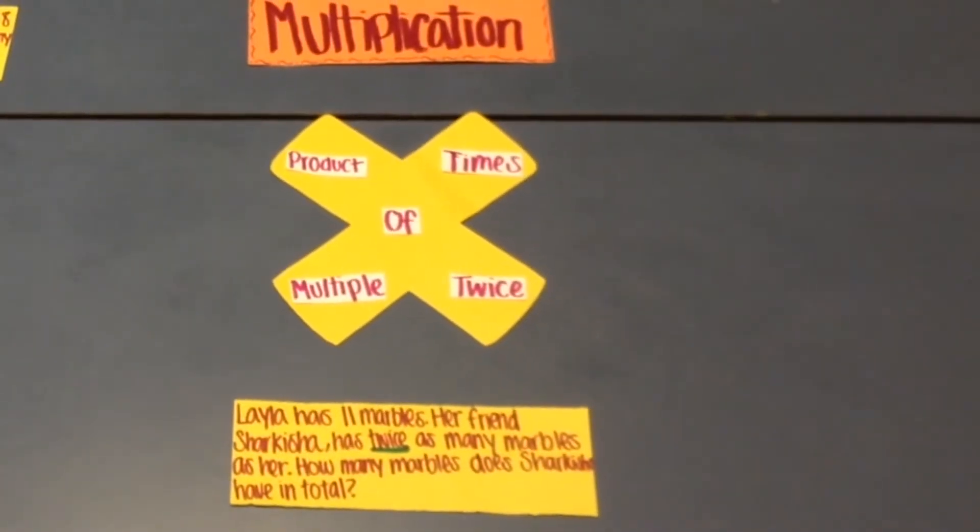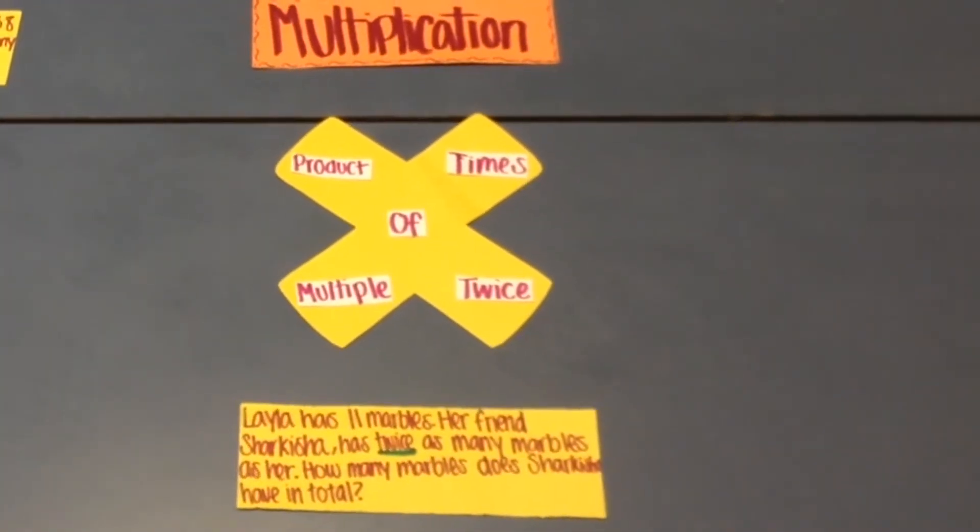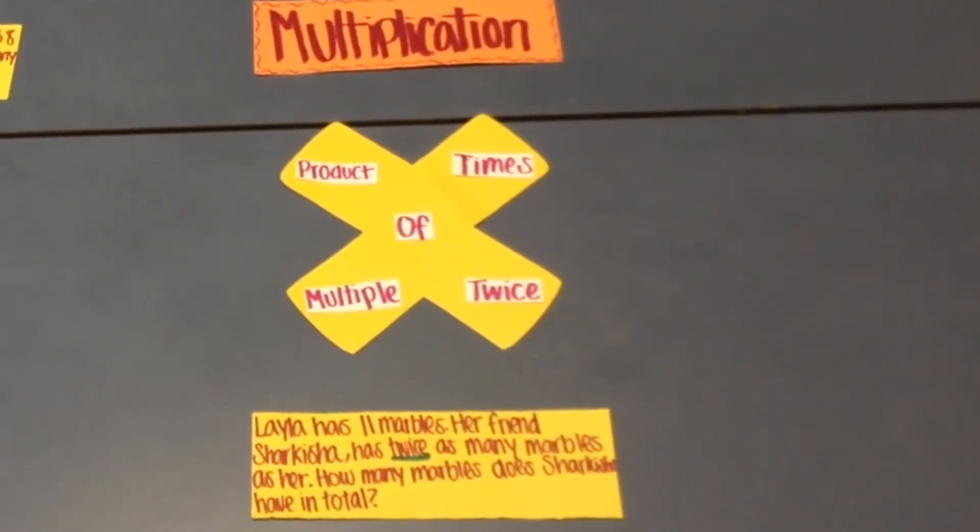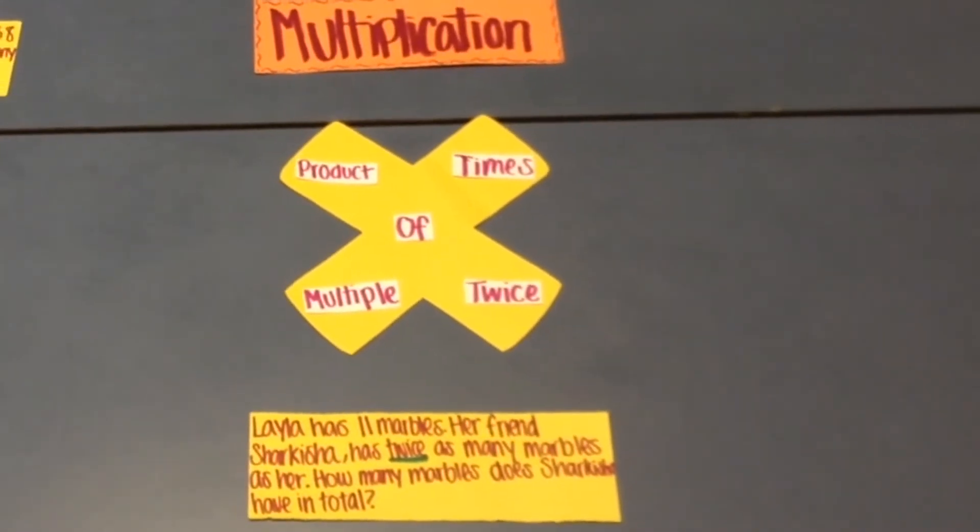A word example. Layla has 11 marbles. Her friend Sharkeisha has twice as many marbles as her. How many marbles does Sharkeisha have in total? The keyword is twice, so it means 11 times 2.